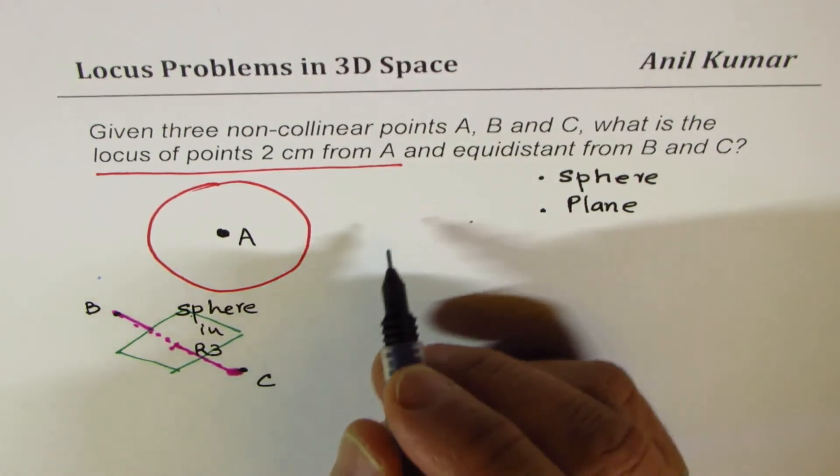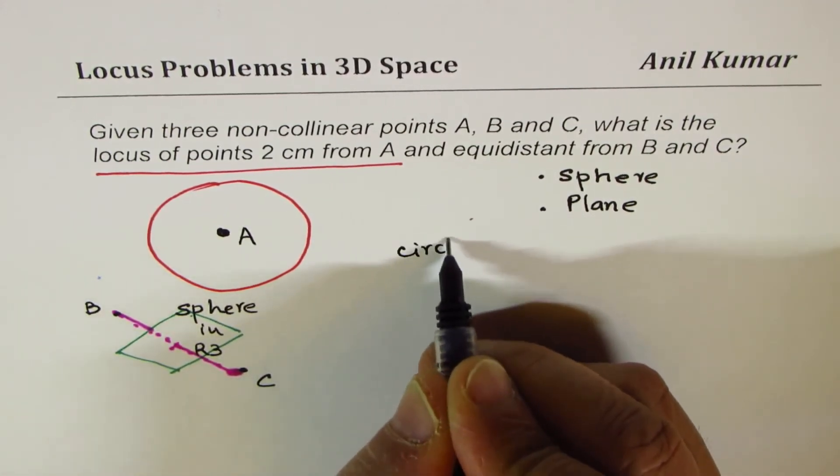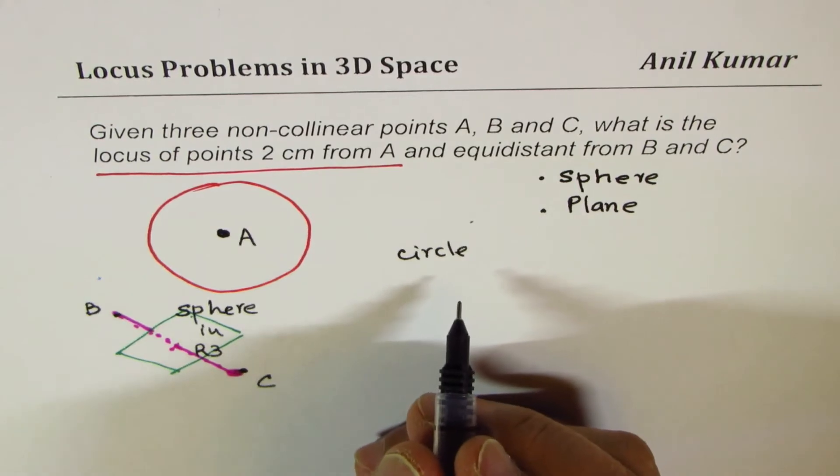So, that is the case, for example, in this particular case, it seems that it will go through this sphere. In that case, we will have circle as a result, right?